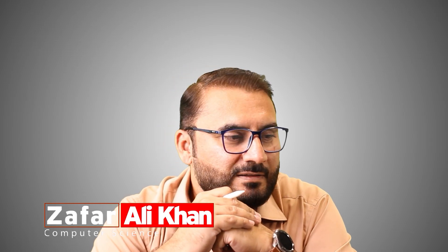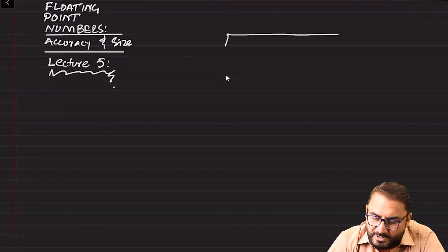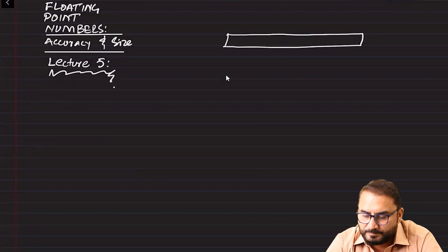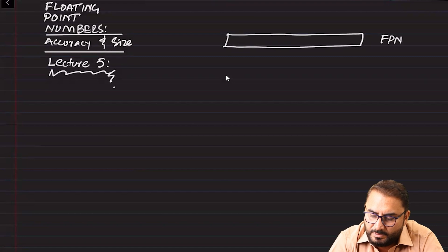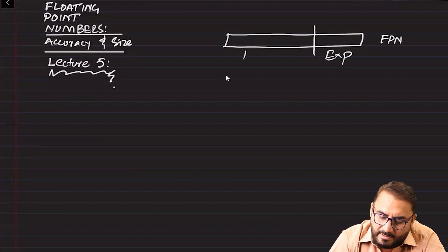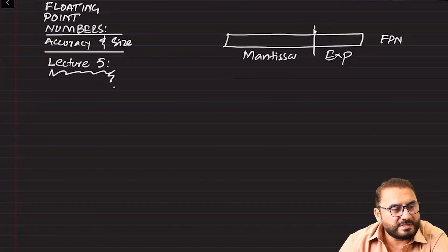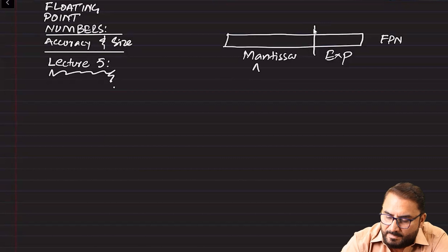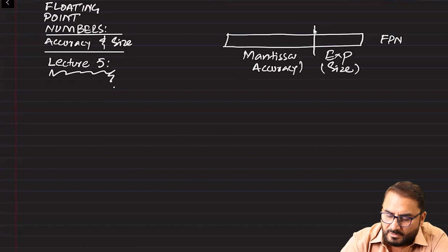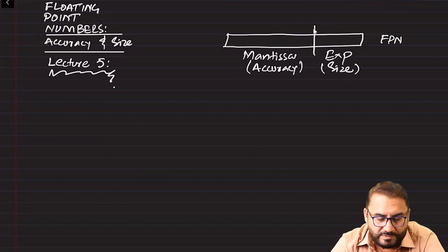Hello and Assalamu Alaikum, this is Afar Ali Khan and we are here with floating point numbers lecture 5. This lecture is about accuracy and size. We have a floating point number with an exponent and a mantissa. The first clarity is that mantissa relates to accuracy or precision, and exponent relates to size.